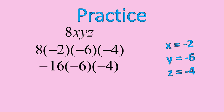8 times negative 2 gives me negative 16. Negative 16 times negative 6 gives me positive 96. And positive 96 times negative 4 gives me negative 384. That's how I would solve this one. I hope that's the answer that you got as well. If not, check the work along the way, because I never make mistakes. Yeah, right.